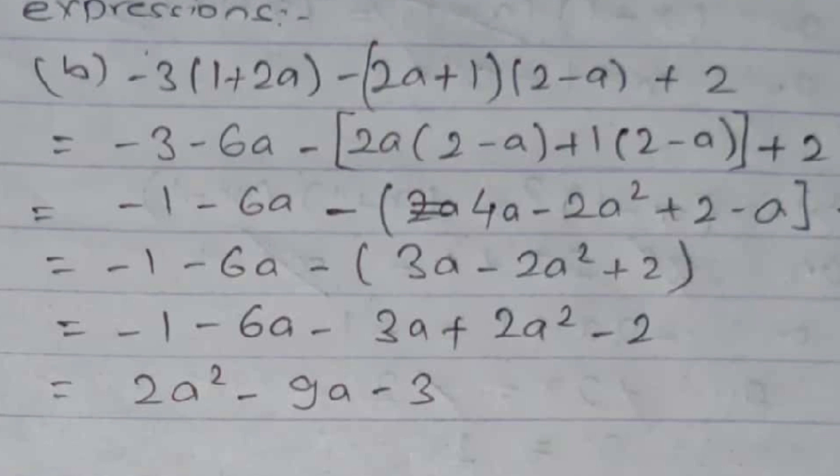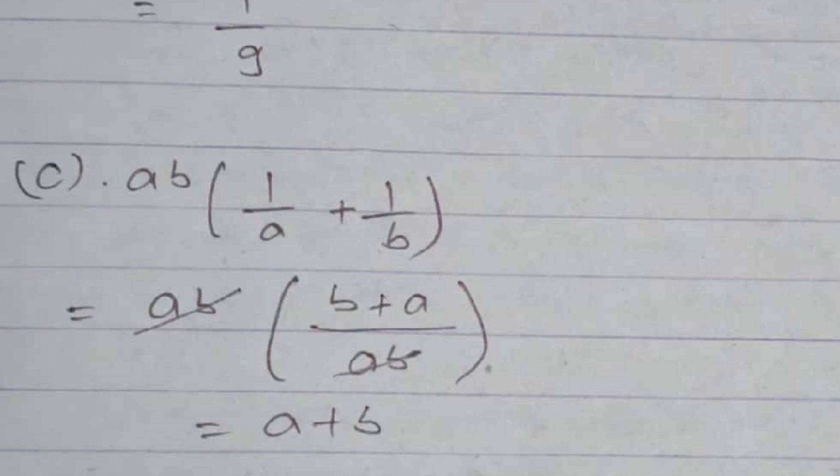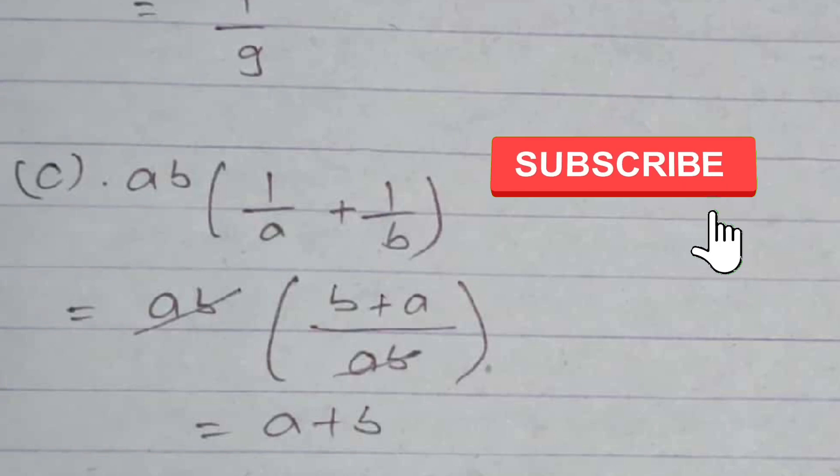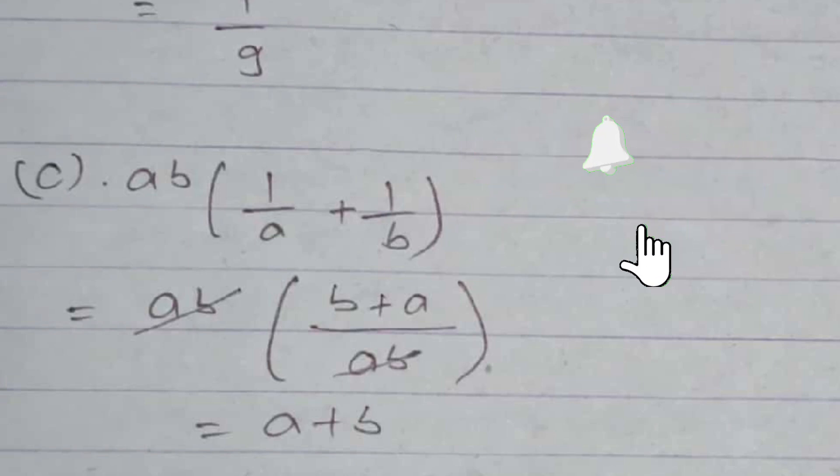Simplifying like terms: −3 + 2 = −1, −6a as is. Then −(4a − a) = −3a, giving −3a − 2a² + 2. Opening the bracket with a negative sign: −1 − 6a − 3a + 2a² − 2. Final answer: 2a² − 9a − 3. Question 1c: ab × (1/a + 1/b). Taking LCM, the ab in the numerator and denominator cancel, giving the answer a + b.